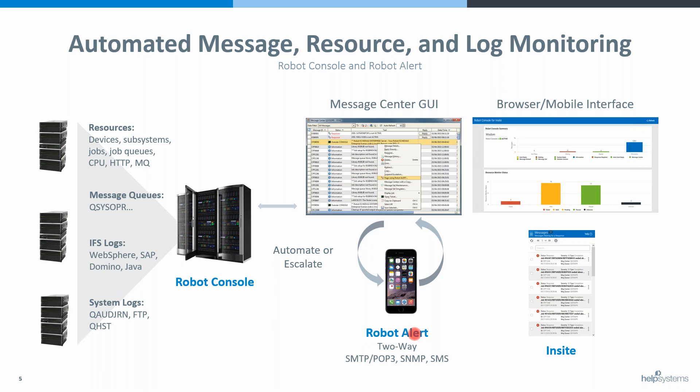Robot Alert allows you to send an SMTP email out to any place that can receive an email. With one-way email you just get alerted. If you have POP3, you can reply to those directly from your cell phone or desktop. Robot Alert also supports SNMP, so you can route alerts up to an enterprise manager to open a ticket.